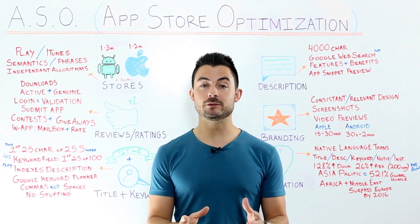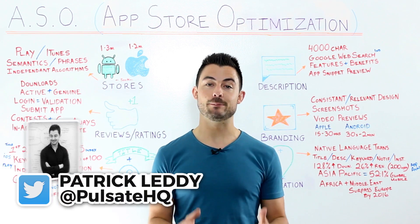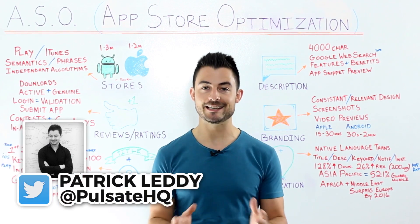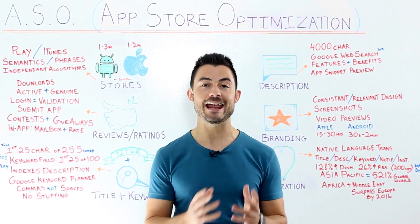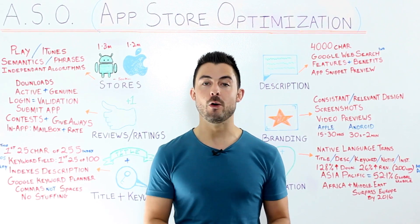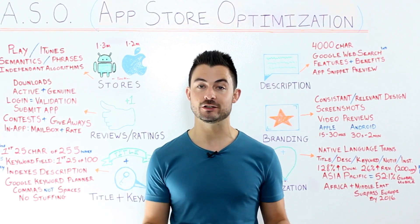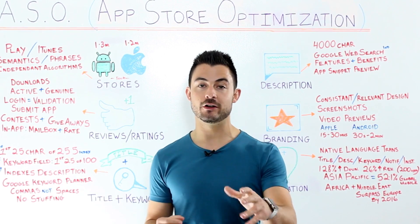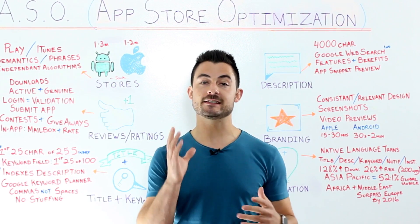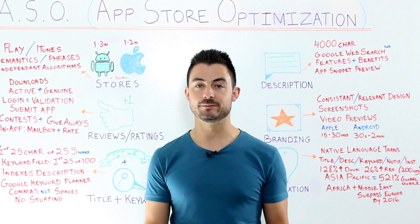Hi guys, and welcome to another episode of Academy by Pulse 8. Today we're going to be discussing ASO, or App Store Optimization — how to get your app discovered and increase more downloads. Let's get into it.